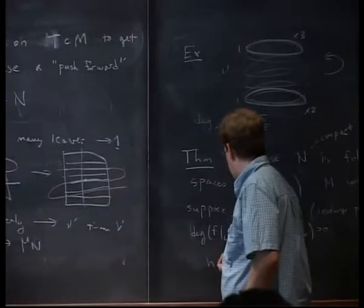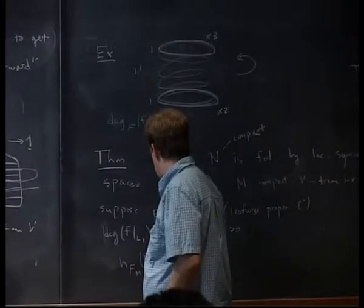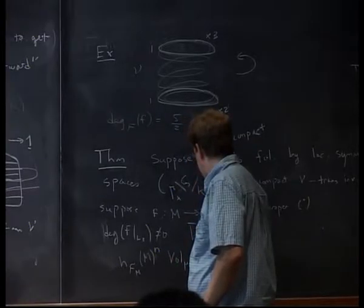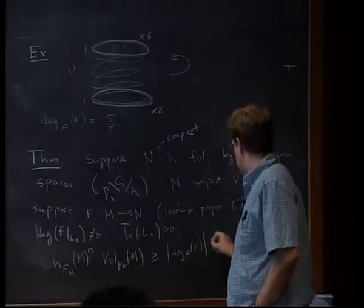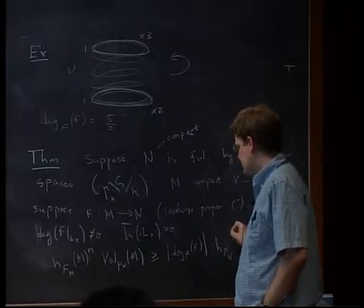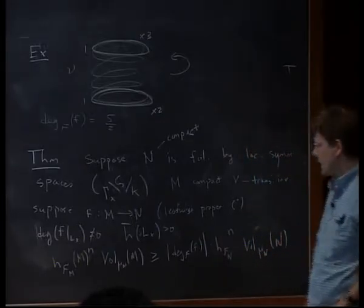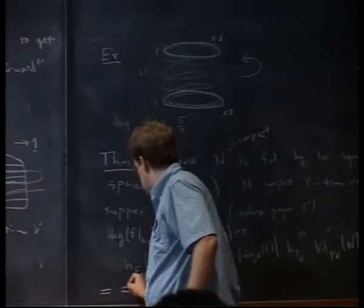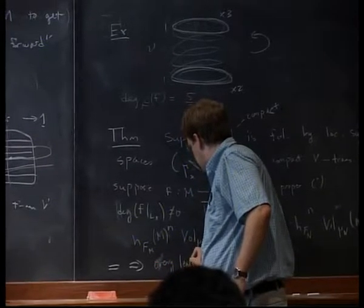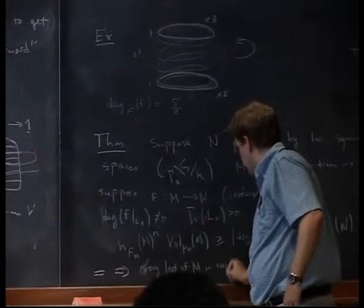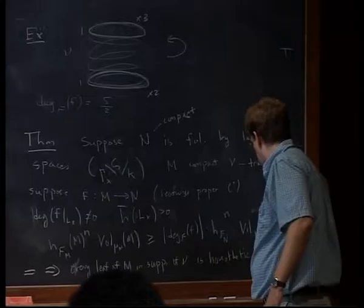The statement is that the foliated entropy of M to the N-th power times the volume mu_M of M is greater than or equal to the absolute value of the foliated degree of f, times the foliated entropy of N to the N-th power, times the volume mu_N of N. And equality implies that nu-almost every leaf of M in the support of nu is homothetic to its image.